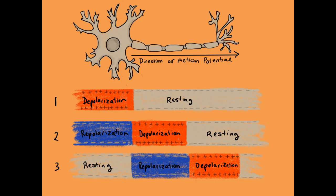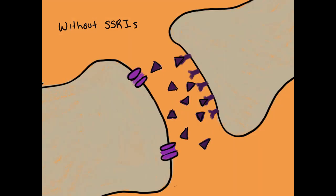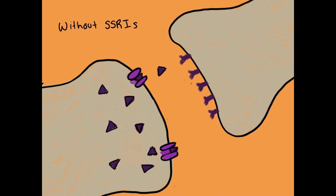Once the message is conveyed, transmembrane serotonin transporters of the pre-synaptic neuron reabsorb serotonin to avoid resending the same message.